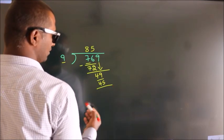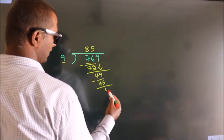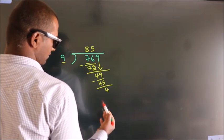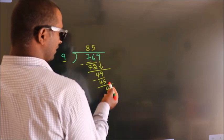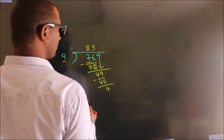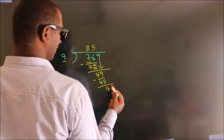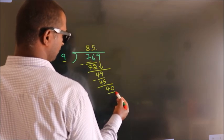Now we subtract, and we get 4. After this, there are no more numbers to bring down. So what we do is put a dot and take 0, making it 40.